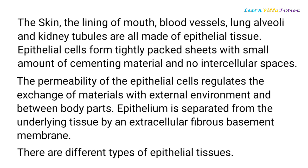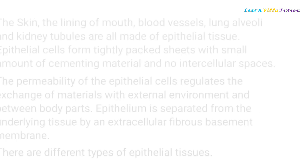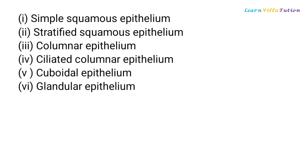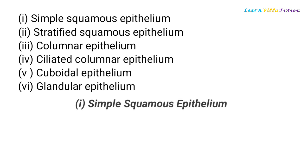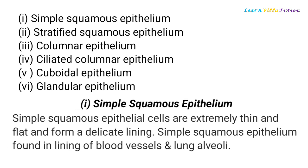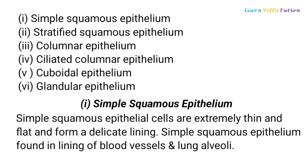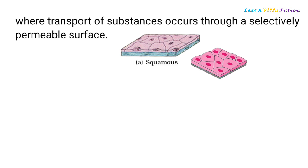Epithelium is separated from the underlying tissue by an extracellular fibrous basement membrane. There are different types of epithelial tissues. Simple Squamous Epithelial cells are extremely thin and flat and form a delicate lining. Simple Squamous Epithelium is found in the lining of blood vessels and lung alveoli, where transport of substances occurs through a selectively permeable surface.